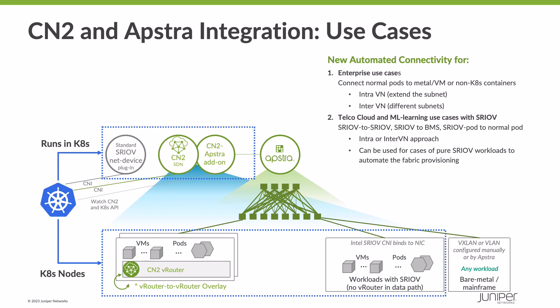For our use cases, we have applications and nodes inside the Kubernetes cluster, and often bare metal servers — whether running bare metal workloads or virtual machines — that exist outside the Kubernetes environment. Those things often need to talk to each other. Networking-wise, this means you might want to stretch a subnet between the Kubernetes environment and the environment interconnecting the bare metal servers — in other words, your physical data center switching fabric managed by AppStra.